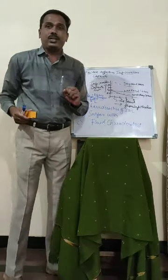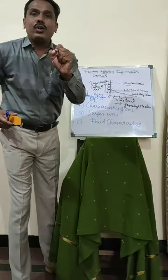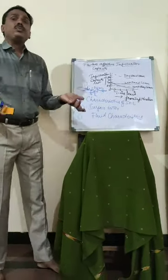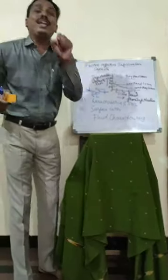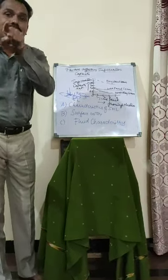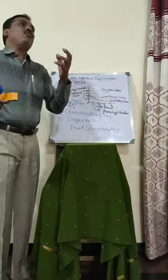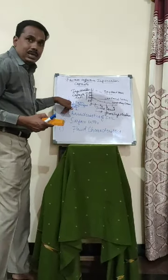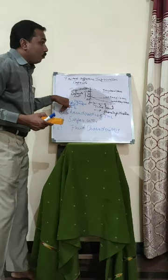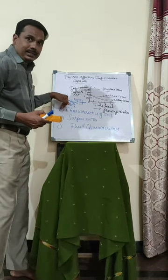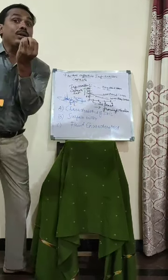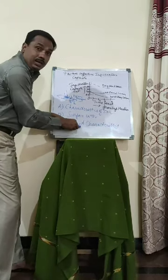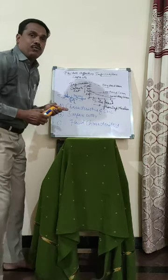Finally, there are fluid characteristics. What do we mean by fluid? The fluid is water, and water has different types of chemistry. The TDS — total dissolved salts — in that particular area matter. For example, if there is a presence of salt on the surface, water will penetrate and pick up those total dissolved salts. This water chemistry is also a factor affecting the infiltration capacity.